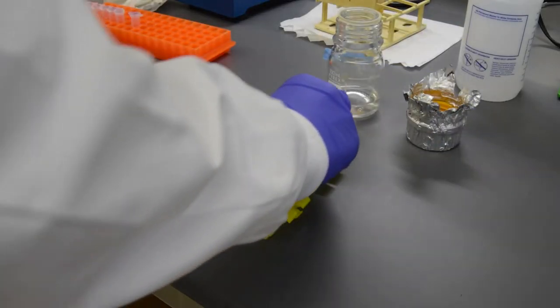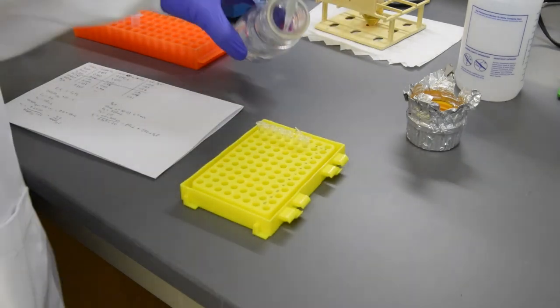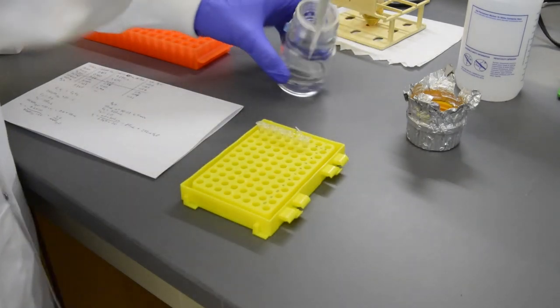Make the appropriate dilutions by mixing water with your cell suspensions. I usually measure out the water into PCR strips first, then add cell suspension.